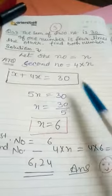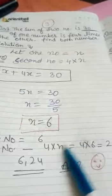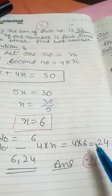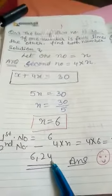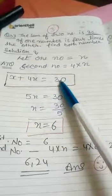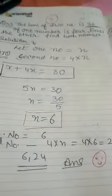Second number will be 4 × x, 4 × x is equal to 4 × 6 is equal to 24. So first number is 6, second number is 24. Their sum is 30. Our answer is correct.